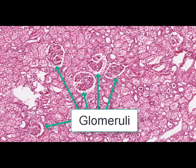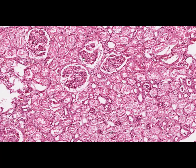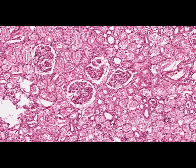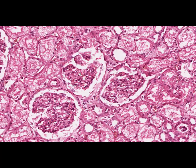On this slide we can see glomeruli which are almost unaffected, and they are surrounded by the renal tubules. Mainly in hydropic degeneration, the proximal tubules are affected.